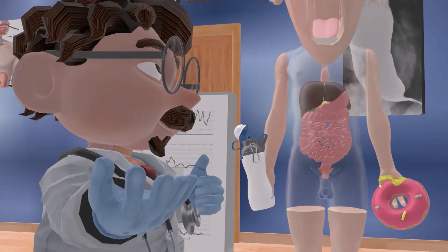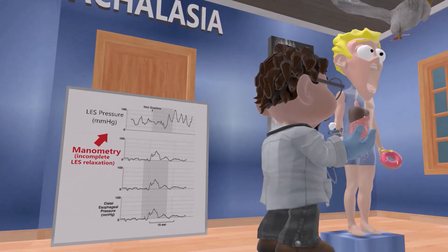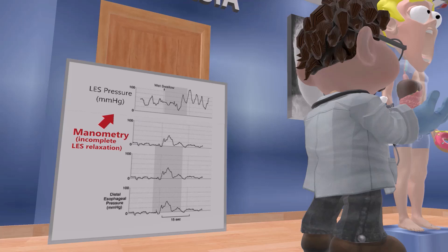Our patient is holding a water bottle and a donut but doesn't want to drink or eat — this represents dysphagia to both liquids and solids. Other symptoms of achalasia include chest pain, regurgitation, weight loss, and nocturnal cough.